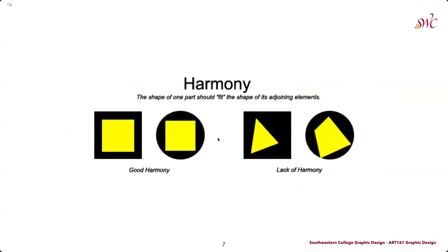Thinking about how the shape of one part should fit into the shape of another, you typically want to find some sort of balance within adjoining elements as well. If we look at the placement in the good harmony versus the lack of harmony examples, you'll notice that these almost share this one-third rule in both cases here on the left.